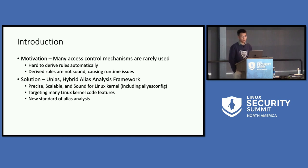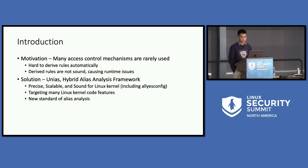We can even analyze with the allyes config Linux kernel, which turns on all possible modules and is quite large for analysis. We also made many efforts to specifically support many Linux kernel code features such as typecasting and pointer arithmetic, which are not well handled in previous work, and eventually we used our analysis to help derive access control rules for some existing kernel access control mechanisms, showing promising results and some improvements.